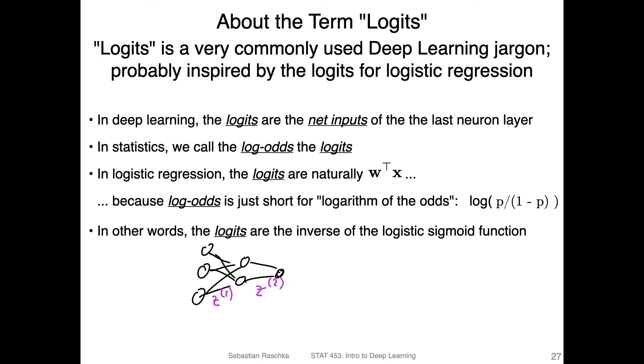But in deep learning, it's very common to call these here—the net inputs that come before the output—to call them the logits. In statistics, the logits have a specific meaning: this is the logarithm of the odds or log-odds. And in the context of logistic regression, which we just covered, these logits are naturally the net inputs. So where does that come from? This is the inverse of our logistic sigmoid function.